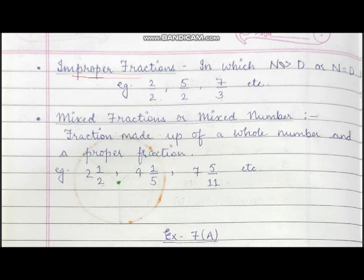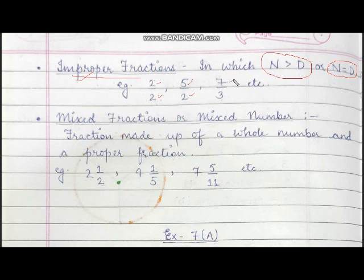Improper fractions are fractions in which the numerator is greater than the denominator, or the numerator is equal to the denominator. For example: 2 upon 2, in which both numerator and denominator are equal — so this is an improper fraction. 5 upon 2, in which numerator is greater than denominator. 7 upon 3 — again numerator is greater than denominator. So these are improper fractions.